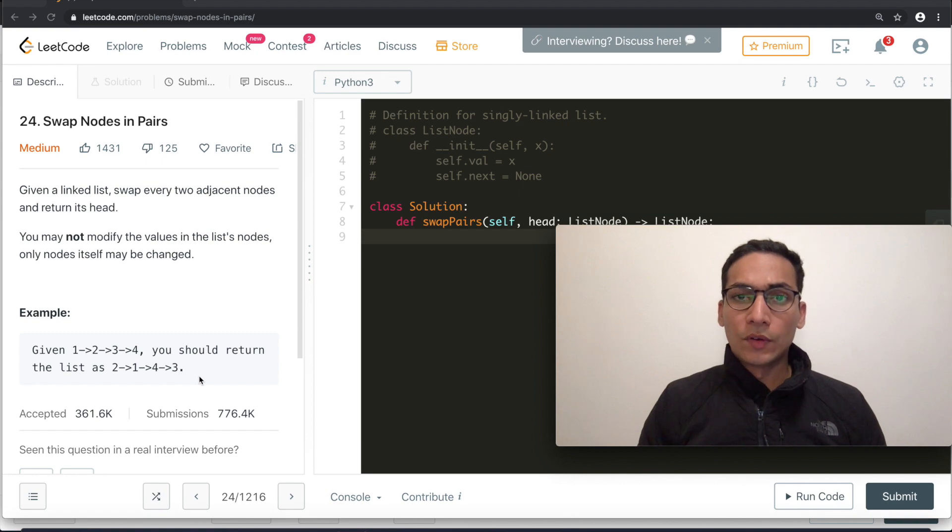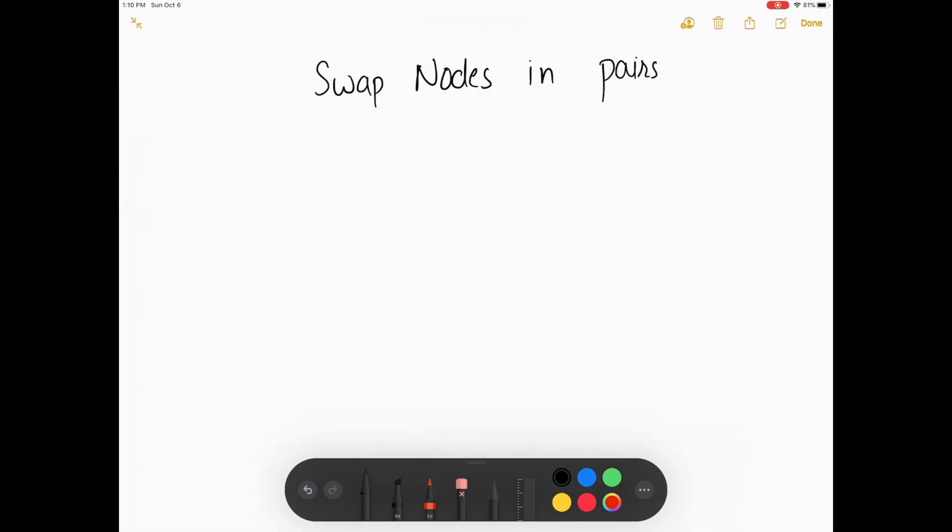pen and paper, after that we will write the code. So we are given with a linked list one, two, three, and four, and we need to return